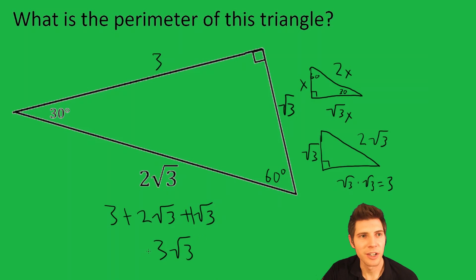So 3 plus 3√3, and that is the answer for the perimeter of this triangle.